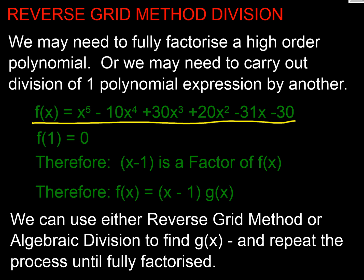What we can do is use the factor theorem and reverse grid method to break it down into its constituent parts. Just to remember from the factor theorem that here if I've got x equals 1 and I put that into this expression here, I find it comes to 0. So I've got 1 minus 10 plus 30 plus 20 minus 30 minus 30 gives us 0. And as that's 0, we know that x minus 1 is a factor of this function. So I could now go on and find what this g of x, the gubbins of all the rest is. And I can do that using reverse grid method.